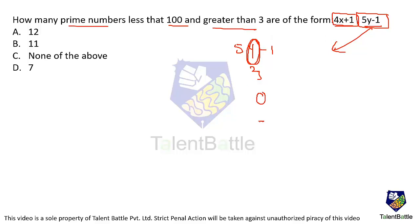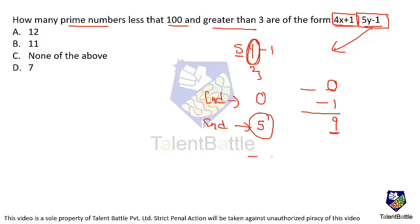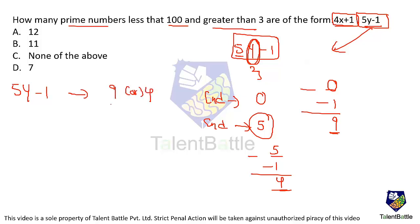Since we need prime numbers, any number ending in 4 is even and thus not prime (other than 2, which doesn't satisfy the condition). So we only need to consider prime numbers ending in 9. Let's list all primes less than 100 ending in 9: 19, 29, 59, 79, 89. (39, 49, 69, 99 are not prime.)